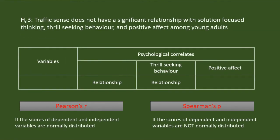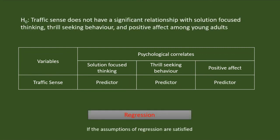Next, I will check if traffic sense has a significant relationship with solution-focused thinking, thrill-seeking behaviour, and positive affect among young adults. As all are continuous variables, I will use correlation. If the scores of all variables are normally distributed, I will use Pearson's correlation; otherwise, I can use Spearman's correlation. If there is a relationship, I may search for predictors among the independent variables using regression.